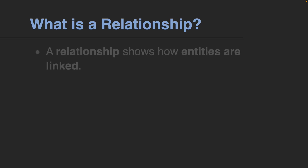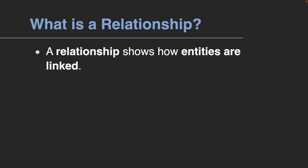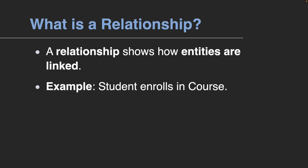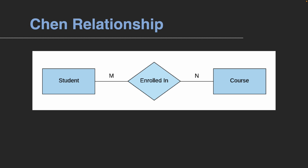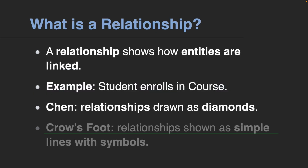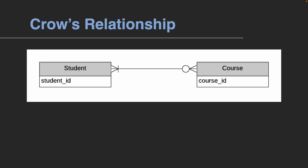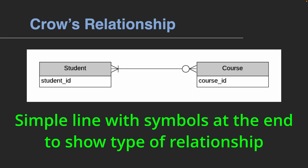Entities connect through relationships. A relationship describes how two entities are linked. For example, a student enrolls in a course. In Chen notation, relationships are drawn as diamonds. In Crow's Foot notation, we often skip the diamond and use a simple line with symbols at the ends to show the type of relationship.